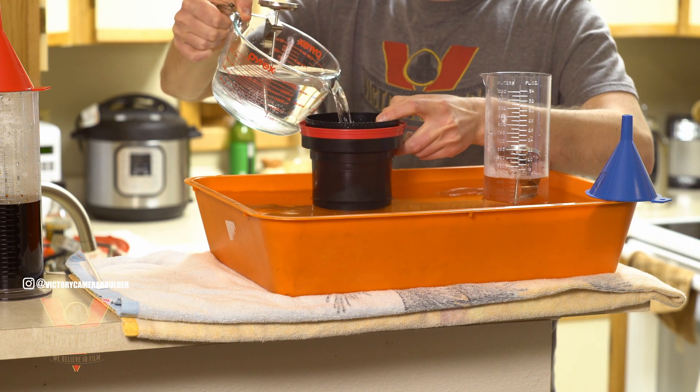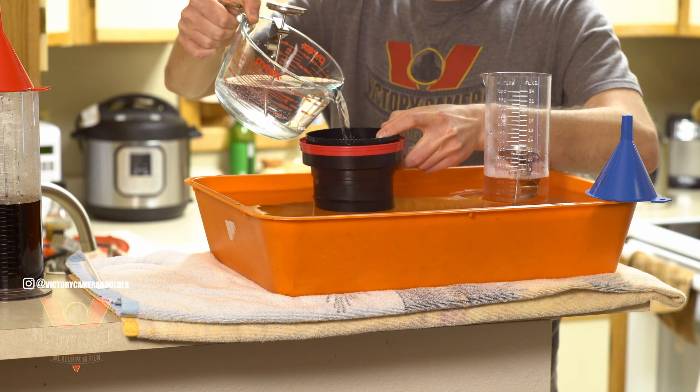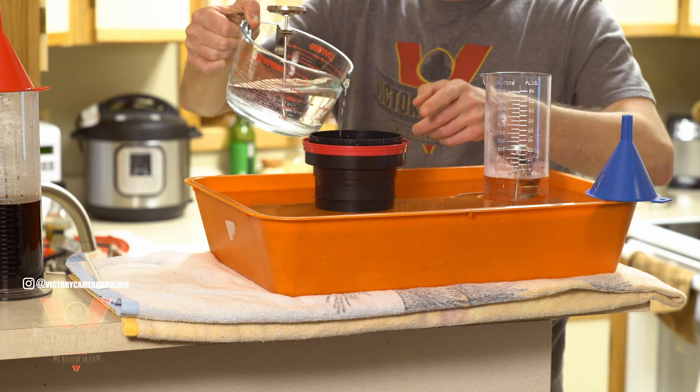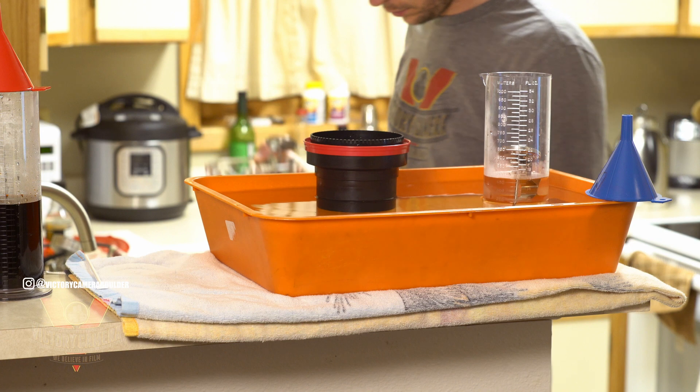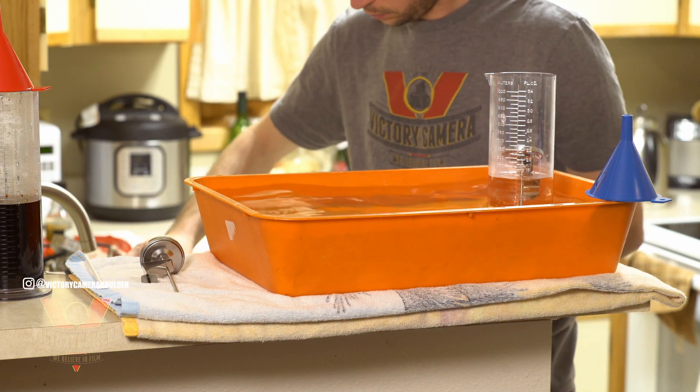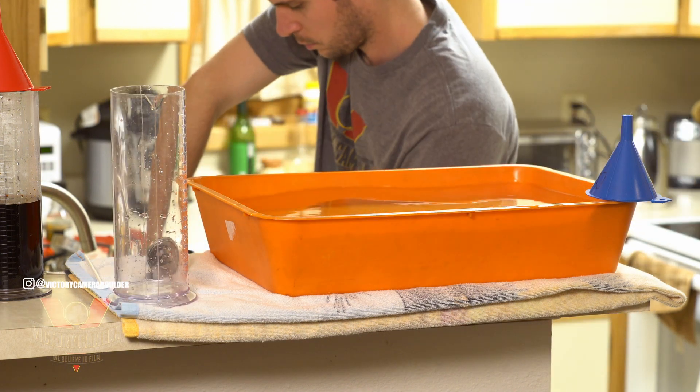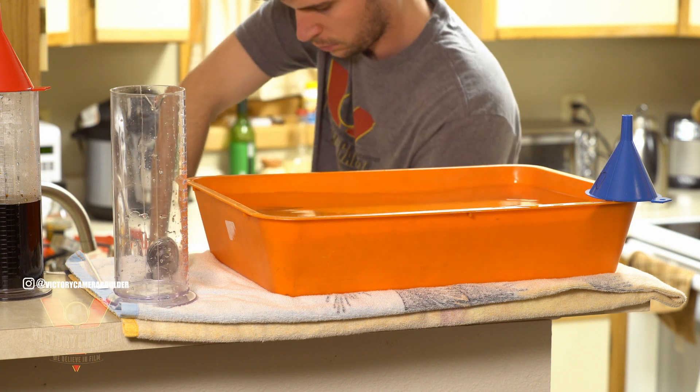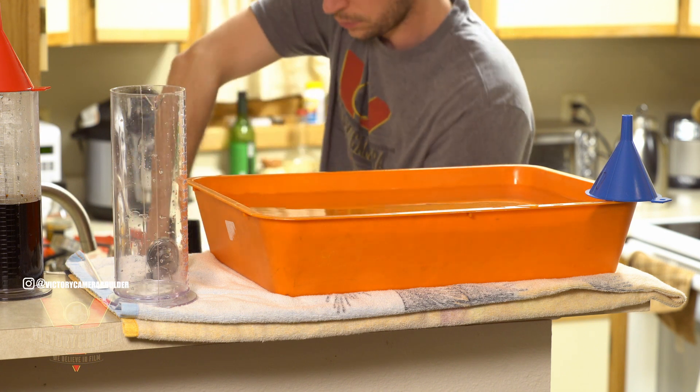You can start with an optional water soak for one minute at the same temperature as your developer. This is to rinse the film of any debris and to warm it up. Then we'll dump that and pour in our developer, agitating for the first 10 seconds, then inverting four times every 30 seconds for a total time of three and a half minutes.